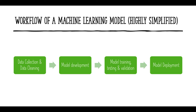Let's move on to the workflow of a machine learning model, which is highly simplified here. We start at collecting data and cleaning this data. With the data, we look for a suitable model. After we have successfully implemented that, we train the model, test it, and validate it. And after that, we go into production and deploy the model.